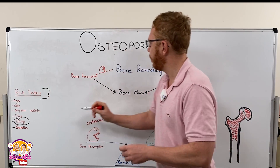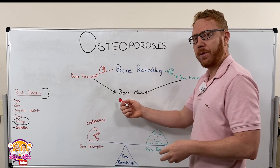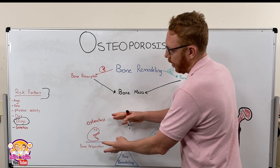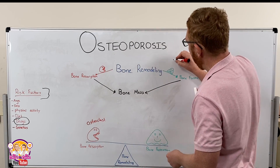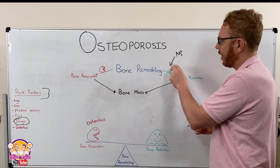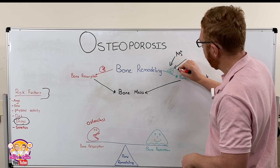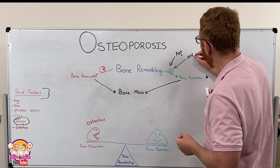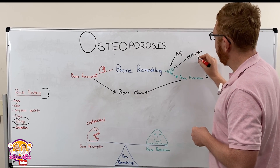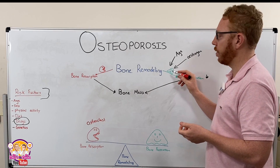Now let's look at how these risk factors feed into the pathophysiology of osteoporosis, starting with age. After the age of 29 years, osteoblast activity starts to drop relative to osteoclast activity, meaning bone formation starts to decrease.